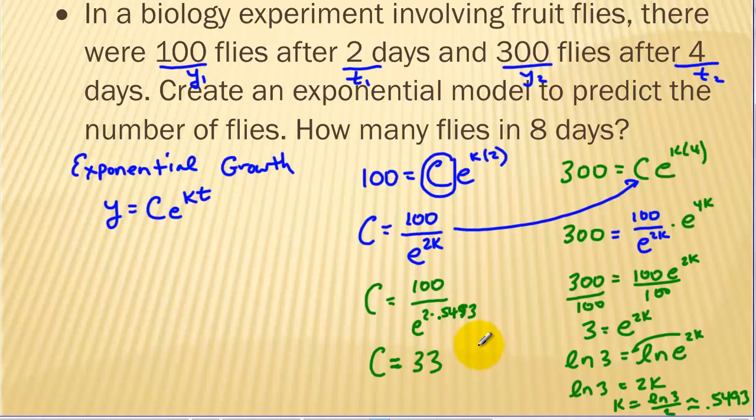When we started we had approximately 33 fruit flies. So now we can write our model. Our model is y equals 33e to the 0.5493t. On a continuous fashion the fruit flies are growing at 55% per day. They increase by 55% per day.